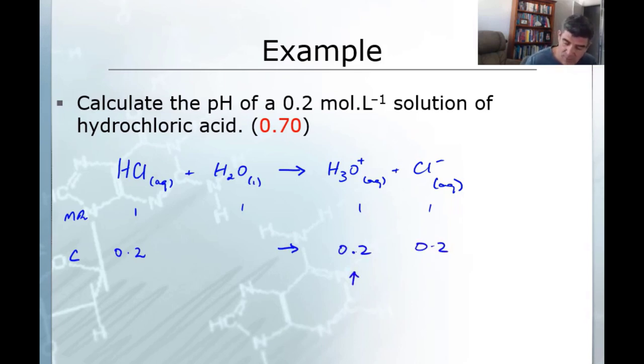So this is the value that we want to use. So therefore, when we do our pH calculation, minus the log base 10 of concentration of H plus ions, which we've said is equivalent to the hydronium ions, then this is going to be pH is equal to minus the log base 10 of 0.2, which works out to be 0.698, which rounds up to 0.70.